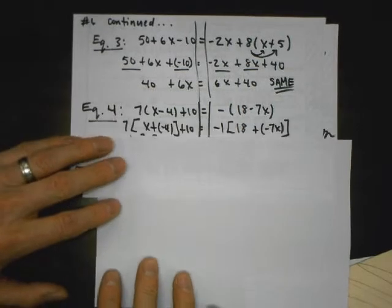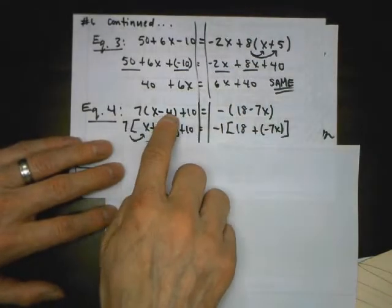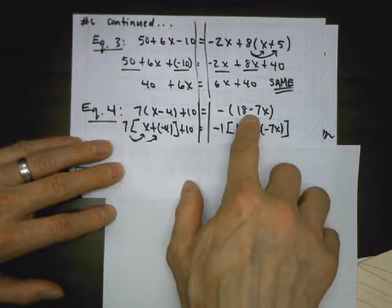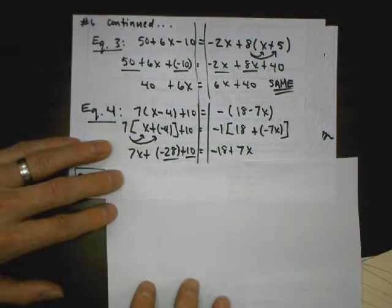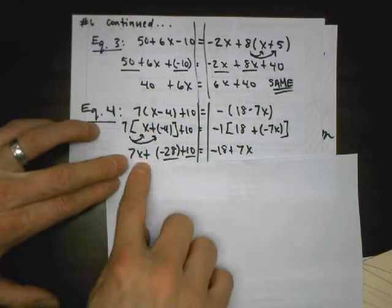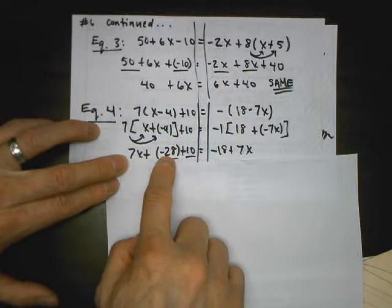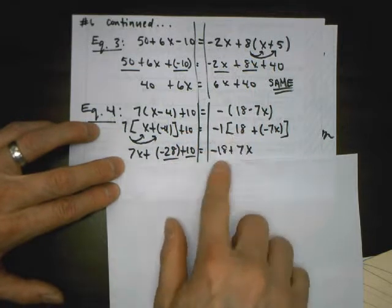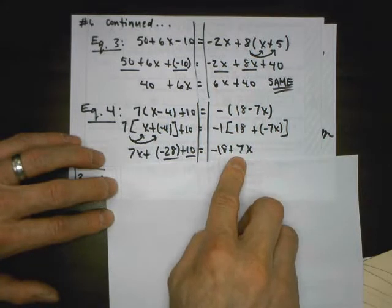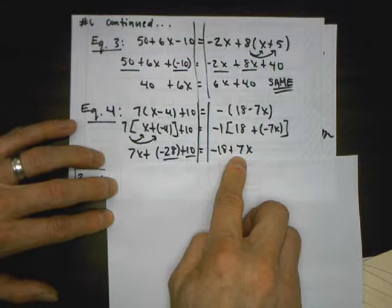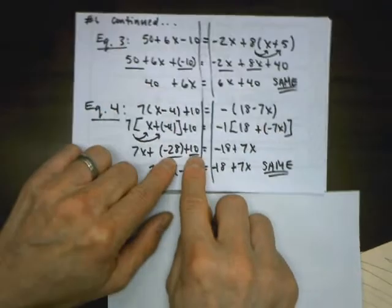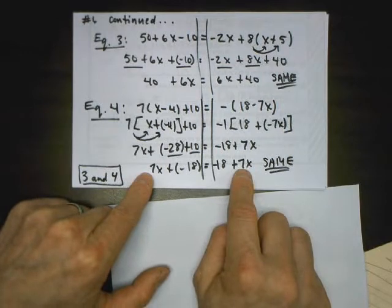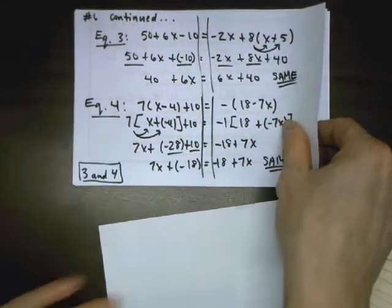Equation 4: I do the rule for subtraction first — minus 4 is plus negative 4, a negative sign outside parentheses is distributing a negative 1. I distribute a 7: 7 times (x minus 4) is 7x minus 28, then copy the plus 10. Negative 1 times 18 is negative 18, negative 1 times negative 7 is positive 7x. Combining constants I get negative 18. I have the same coefficients and same constants — that is infinitely many solutions.